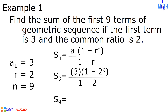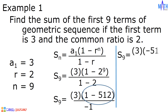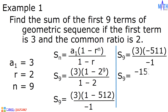Let us simplify. S sub 9 is equal to 3 times the quantity 1 minus 2 raised to 9, which is equal to 512, all over 1 minus 2, which is equal to negative 1. We have S sub 9 equal to 3 times the quantity 1 minus 512, which is negative 511, all over negative 1. S sub 9 equals 3 times negative 511, which is negative 1533, divided by negative 1. S sub 9 is equal to positive 1533. This is the sum of the first 9 terms of the geometric sequence whose first term is 3 and common ratio is 2.